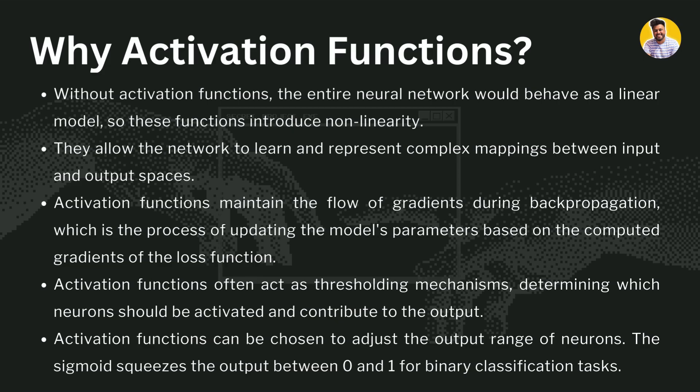Activation functions act as thresholding mechanisms, determining which neurons should be activated and contribute to the output. They also adjust the output range of neurons — for example, sigmoid squeezes the output between 0 and 1, while softmax squeezes the output into a probability distribution. That's how these activation functions are useful.